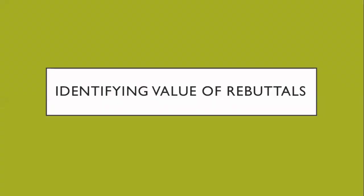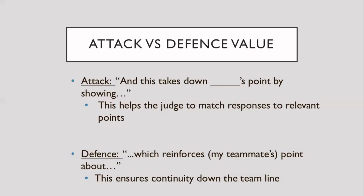Once you have done that two-step process, the next step is being able to explain the value of what you just did — tell the audience or the judge why what you just said is so important. This is known as proving significance, or the 'so what' phase of response. Even if you successfully take down a single argument from the other side, the judge might still not see why all of this work was relevant. There are two ways to prove significance. The first is proving attack value: at the end of your rebuttal, say 'this takes down the other side's point of X by showing that...' This helps the judge match responses directly to the relevant points the other side is making.